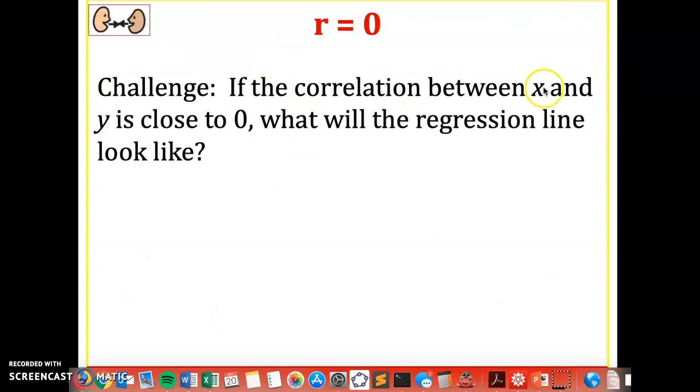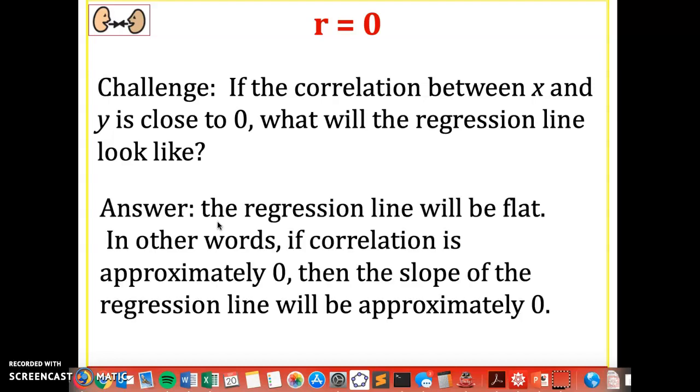So suppose you have the correlation between x and y is approximately zero, so close to zero. What will the regression line look like if you have little to no correlation between two variables? If that's the case, the regression line will be flat, approximately flat. How I think about this is if the correlation is approximately zero, then the slope of the regression line will be approximately zero. We're going to have a slope of about zero.